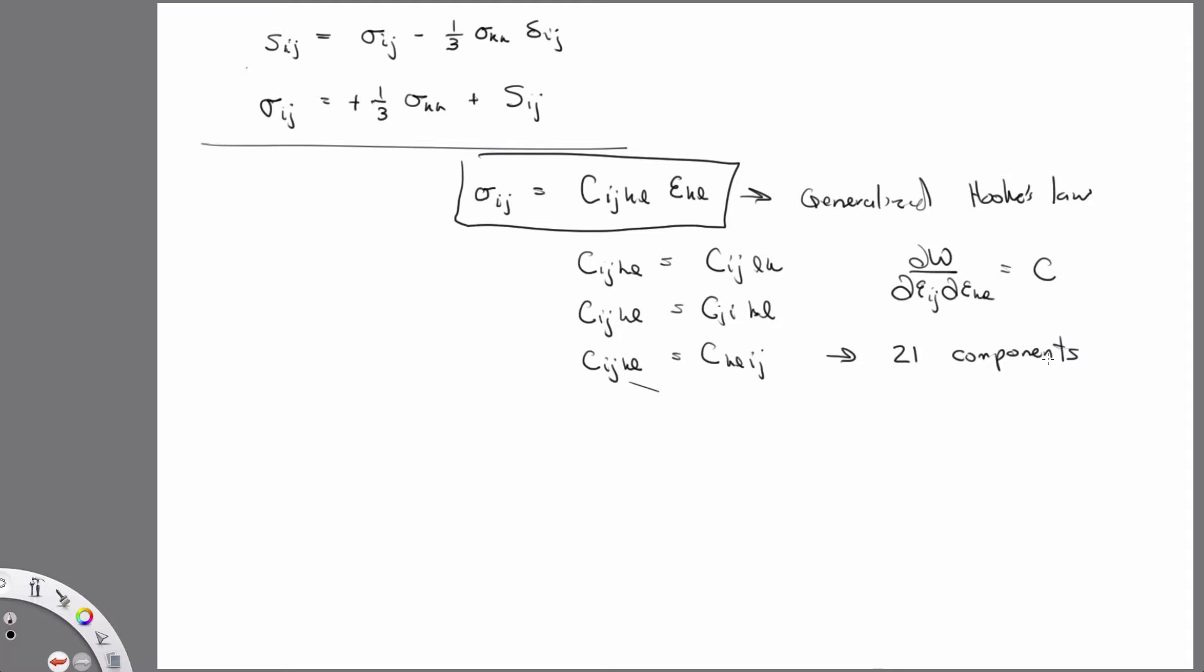And so, since there's only 21 unique components, and exploiting the symmetry of the strain and stress tensors, sometimes it's a little more convenient to write this in something we call Voigt notation. It's more of a vectorized notation than a tensor notation. So we're going to have a stress vector now. And the order is important. The diagonals go first.